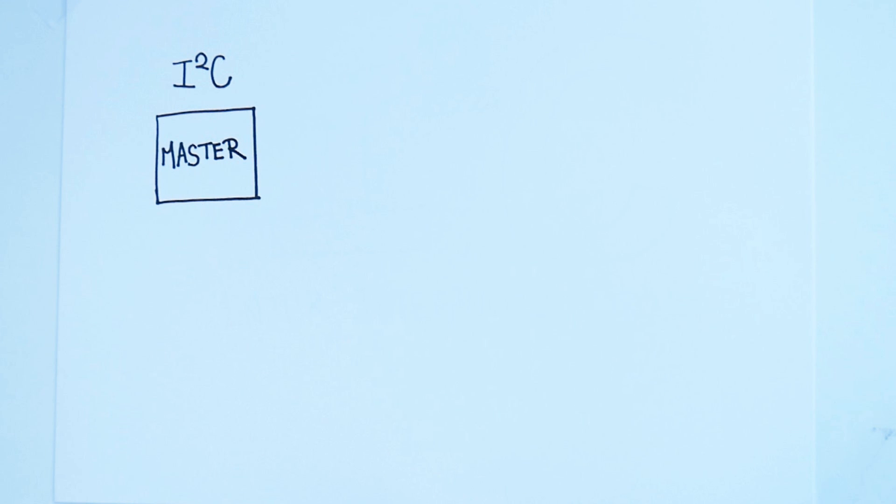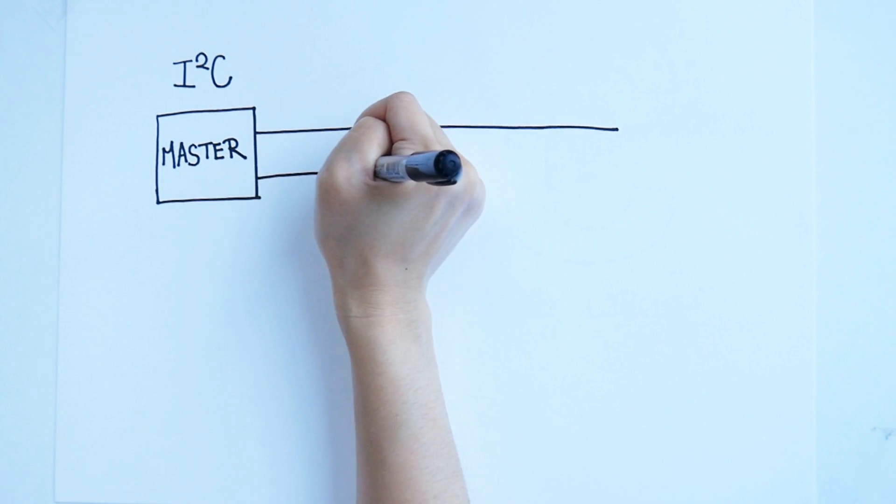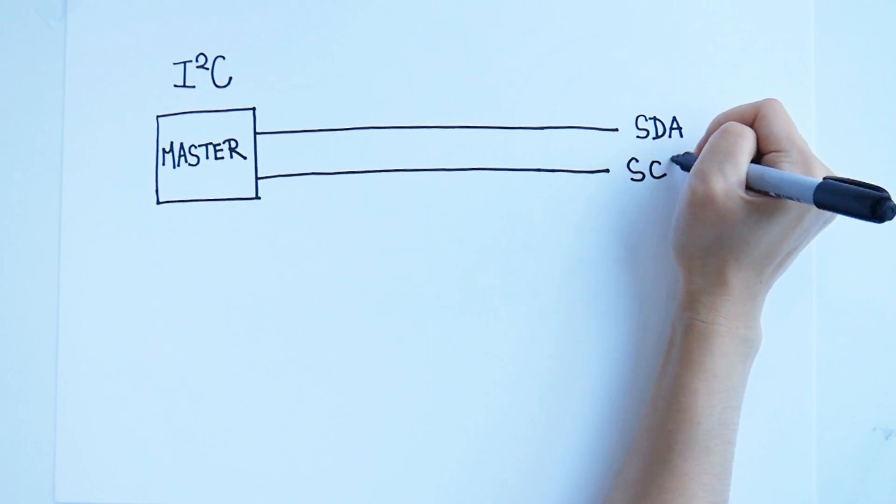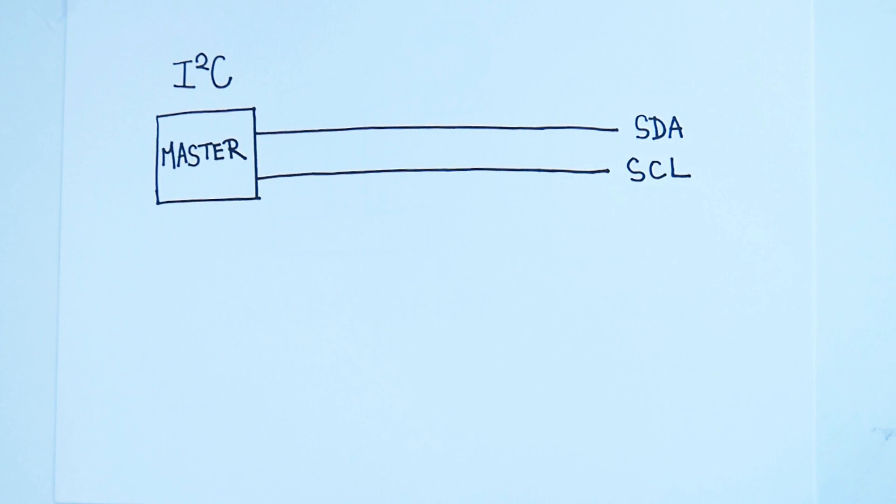The two signals used are Serial Data Line, also known as SDA, and Serial Clock, referred to as SCL.